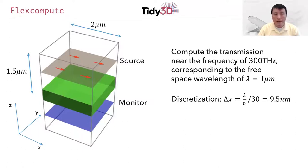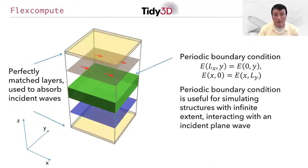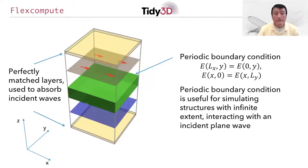As mentioned in the last video, for any finite difference time domain simulation you will need to choose the boundary conditions that truncate the computational domain. In our case, we put perfectly matched layers along the z direction — these are artificial absorbers used to absorb incident plane waves to simulate an open structure along the z direction. In the xy dimensions, the slab is uniform, and therefore we put in periodic boundary conditions. These periodic boundary conditions are useful for simulating structures with infinite extent interacting with an incident plane wave.